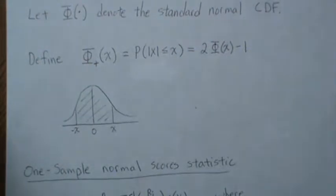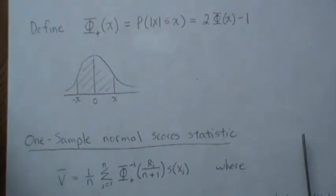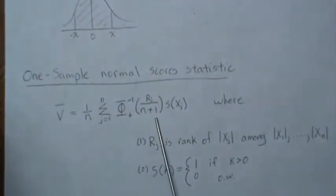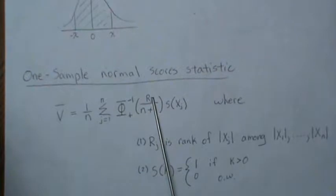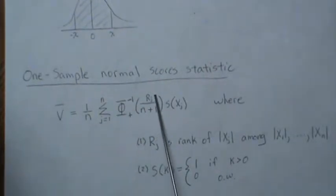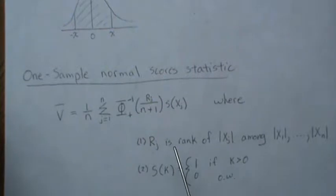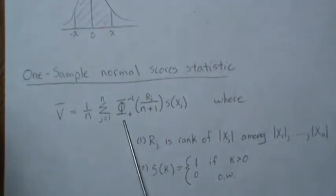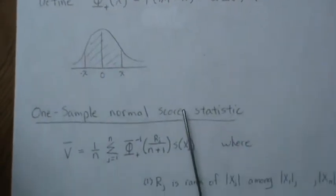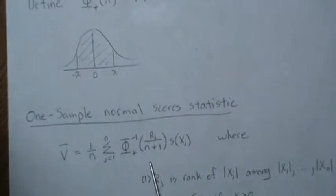If we look at the one-sample score statistic, which is defined as this — this here is from the Wilcoxon sign rank test, which is 1 if positive and 0 if negative (the argument, that is). And r is the rank of the absolute value of the data among all the absolute values of the data. This is a function of the rank, so this is what's called a general scores statistic. You can have different score generating functions, and this one uses the normal distribution — specifically the inverse normal, the inverse of the phi-plus function.